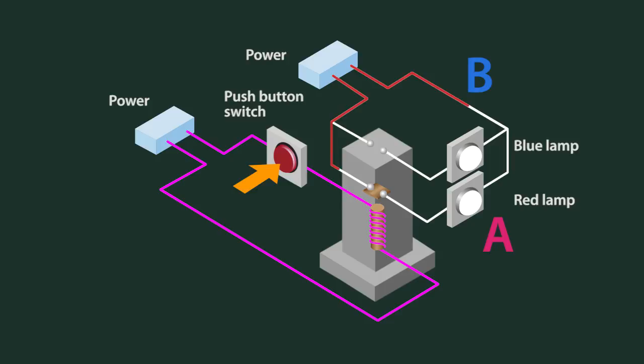When the relay contact is pulled down, electricity will run through Route A, and the red light will turn on.